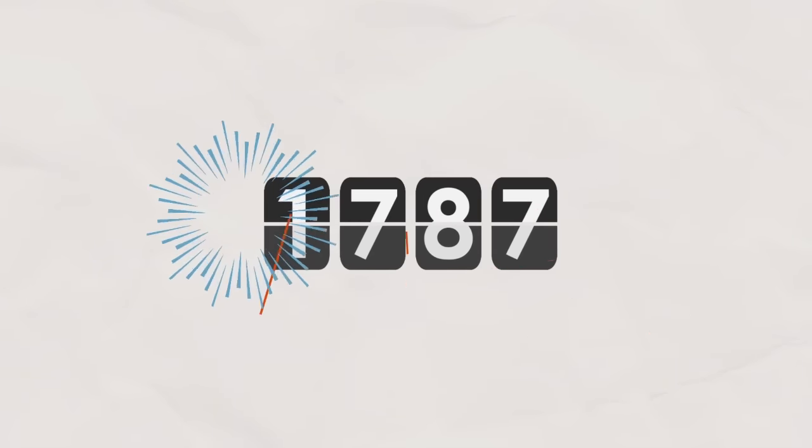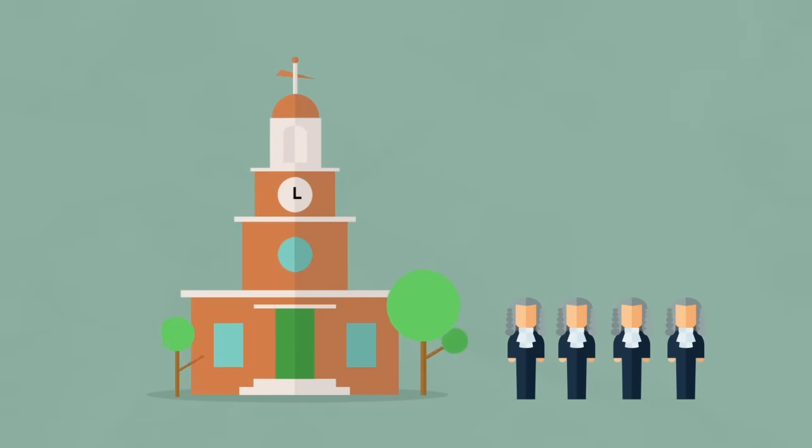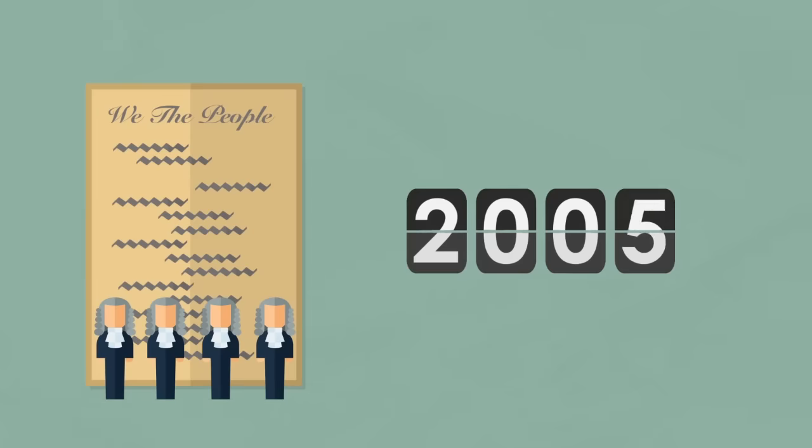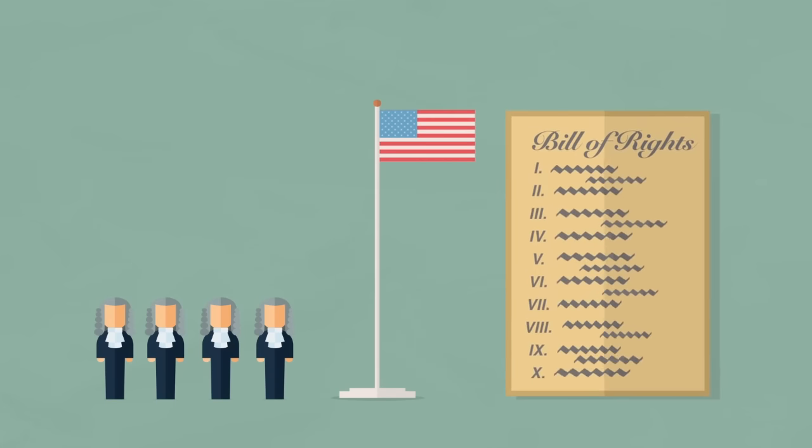1787, what an important year for America. At the time, its founders had no idea their experiment, the Constitution, would actually work and become the oldest Constitution in use today. The founders even went one step further to ensure citizens their individual liberties would always be protected by adding ten amendments, the Bill of Rights.